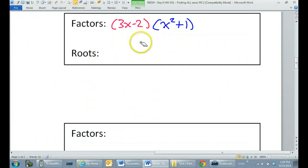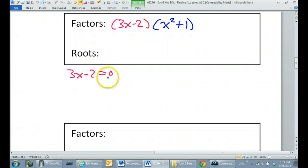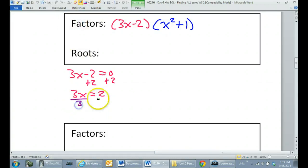Now, we just need to get the roots out of this. The roots will be, if we set the 3x minus 2 equal to 0, adding 2 to both sides gives us 3x equals 2. Dividing by 3 on both sides gives us x equals 2 thirds. So, we have 2 thirds.